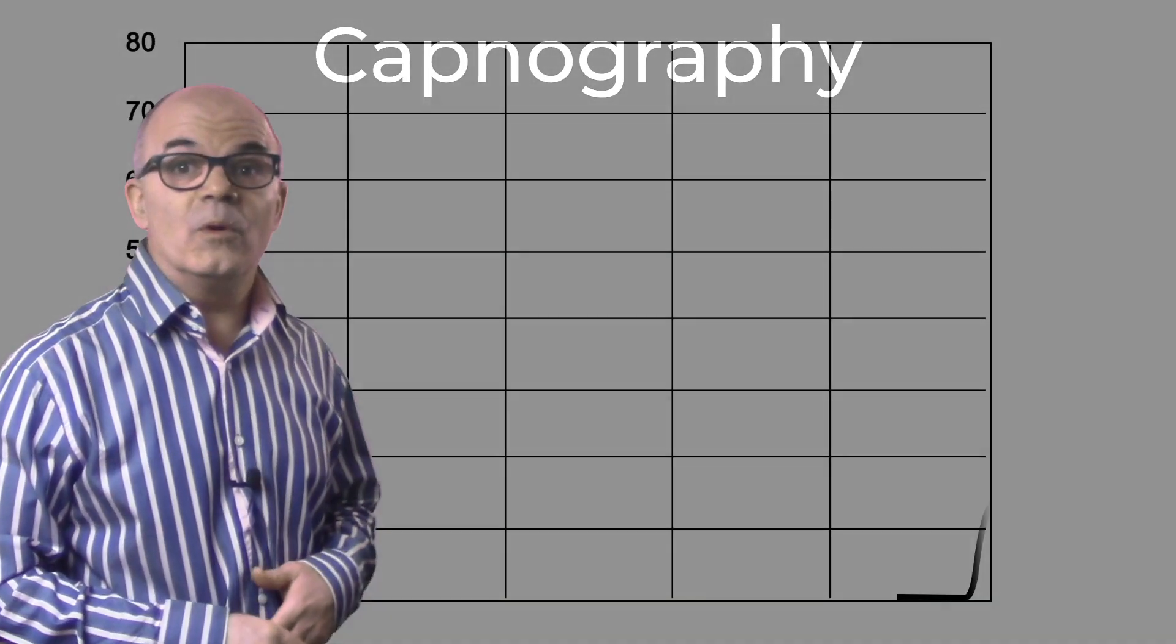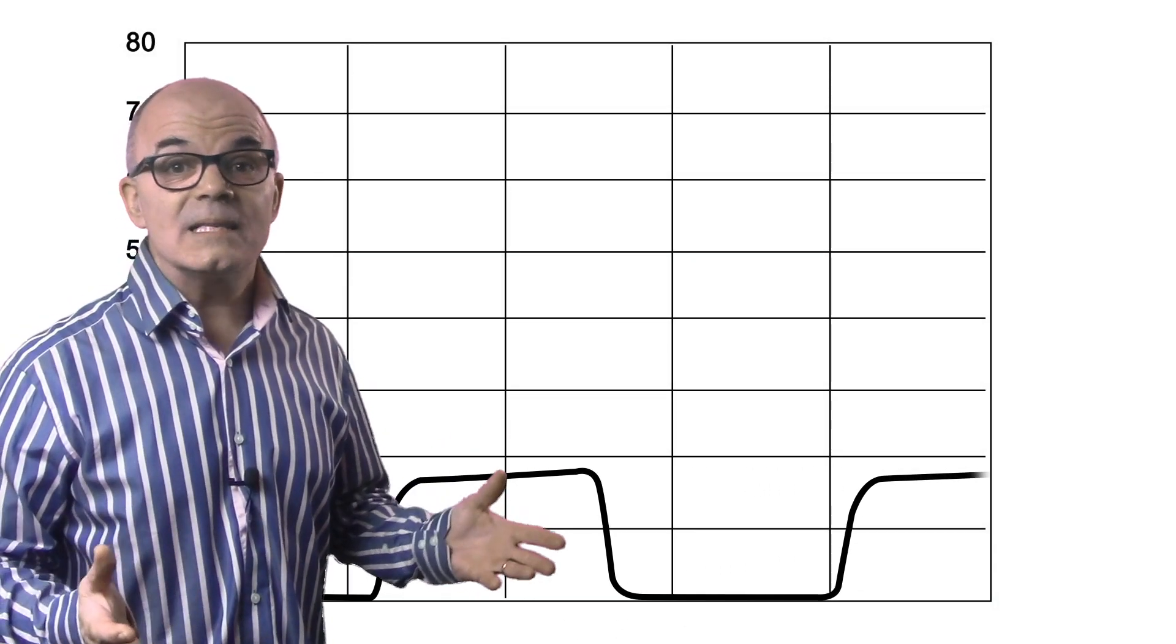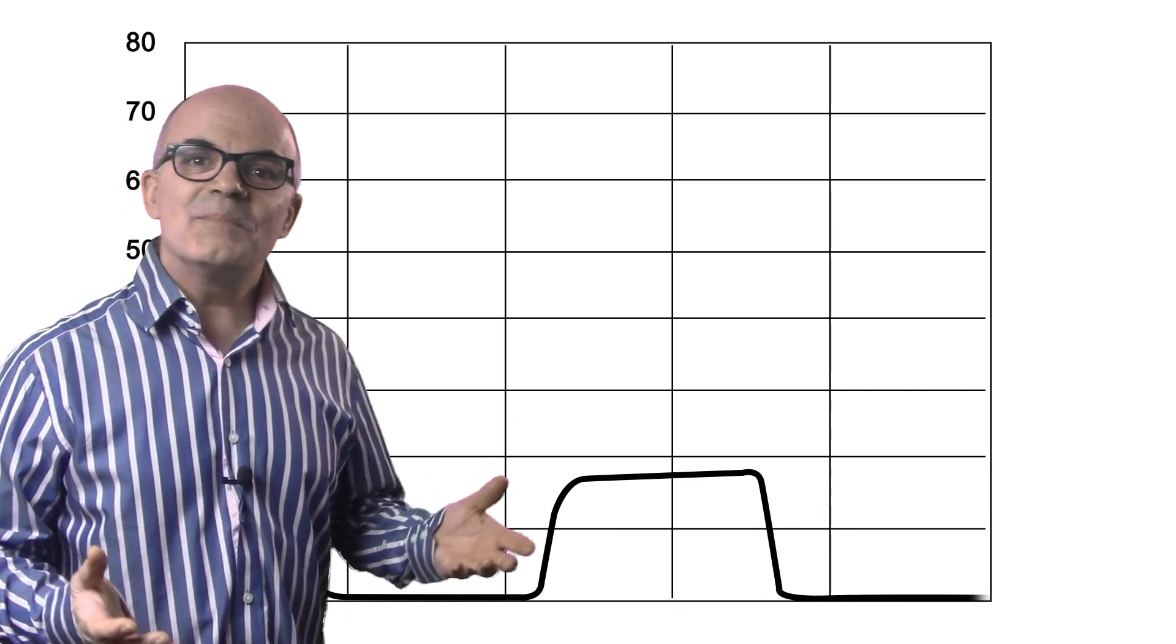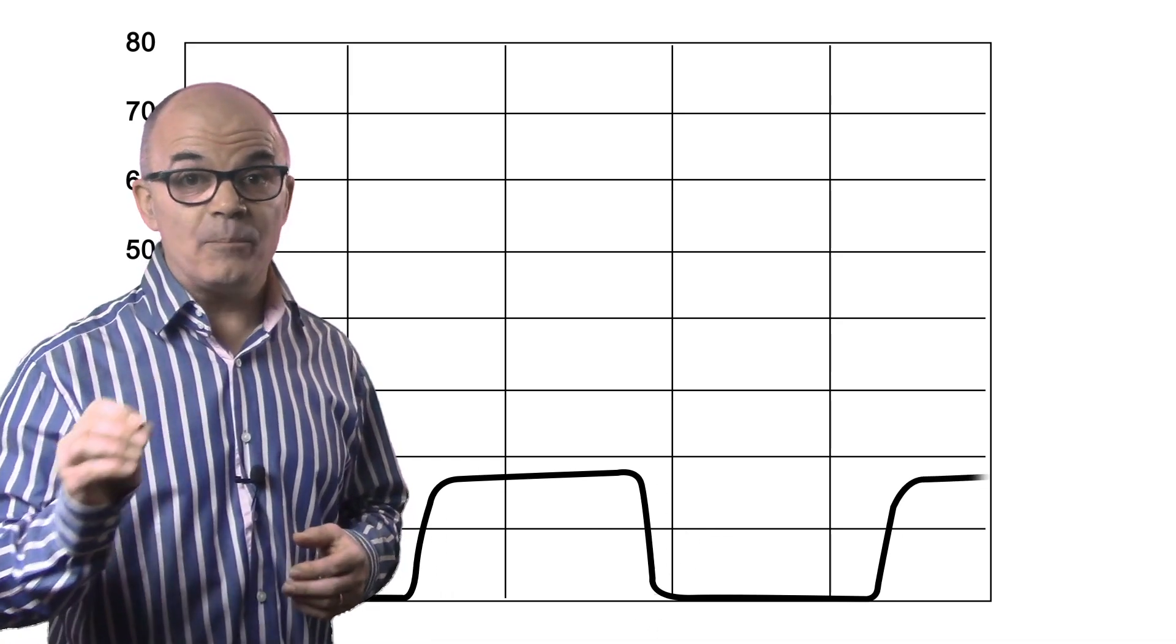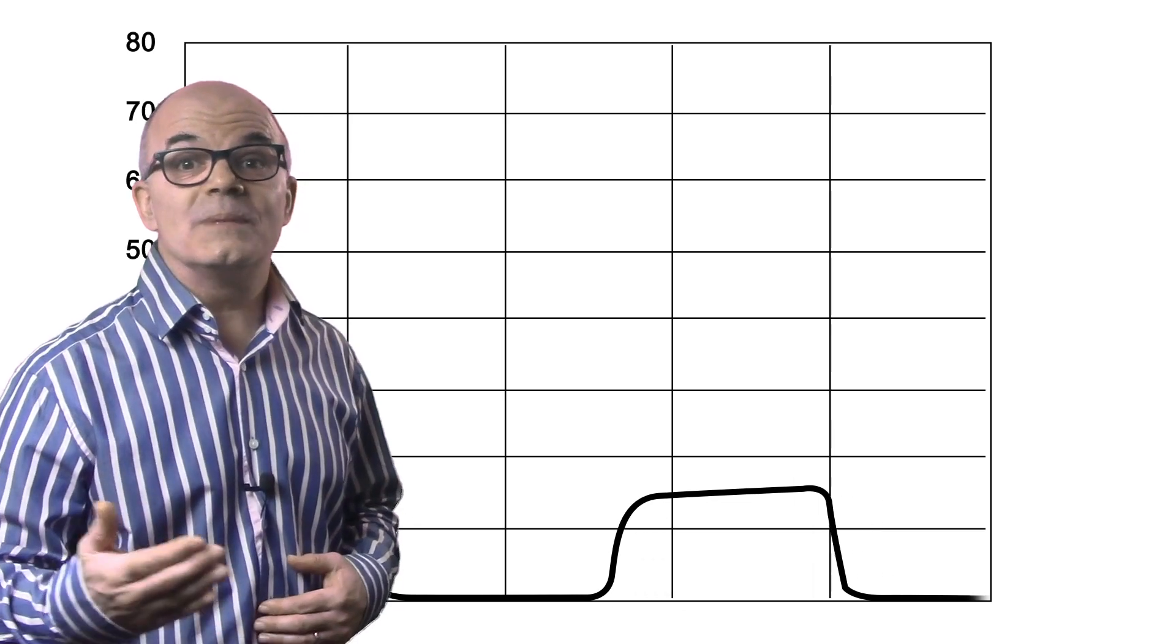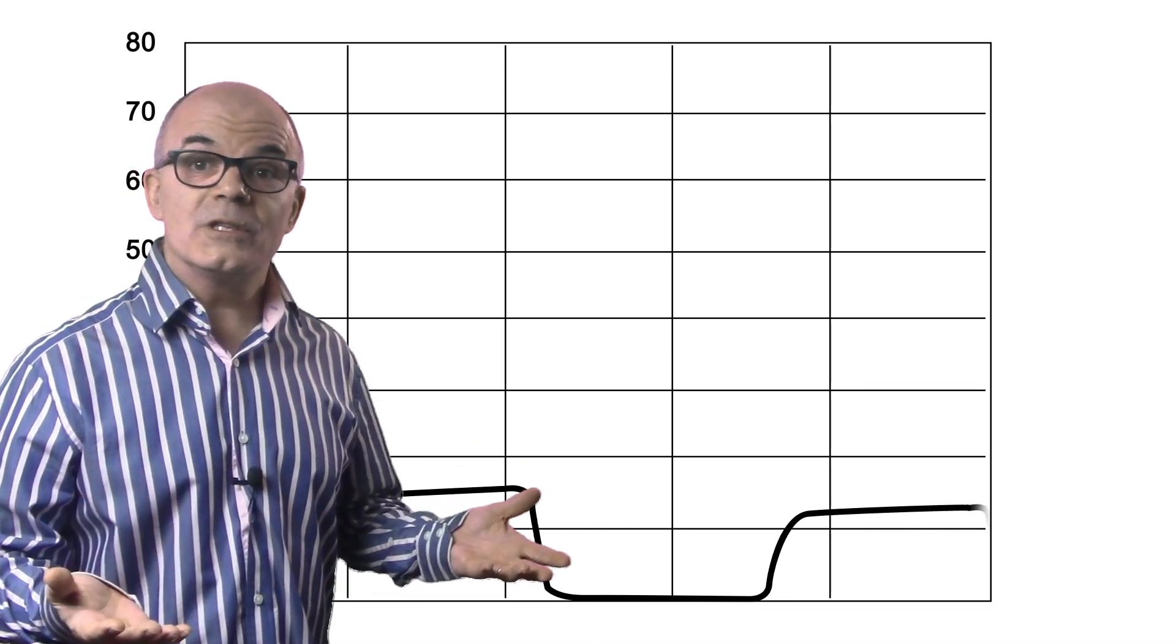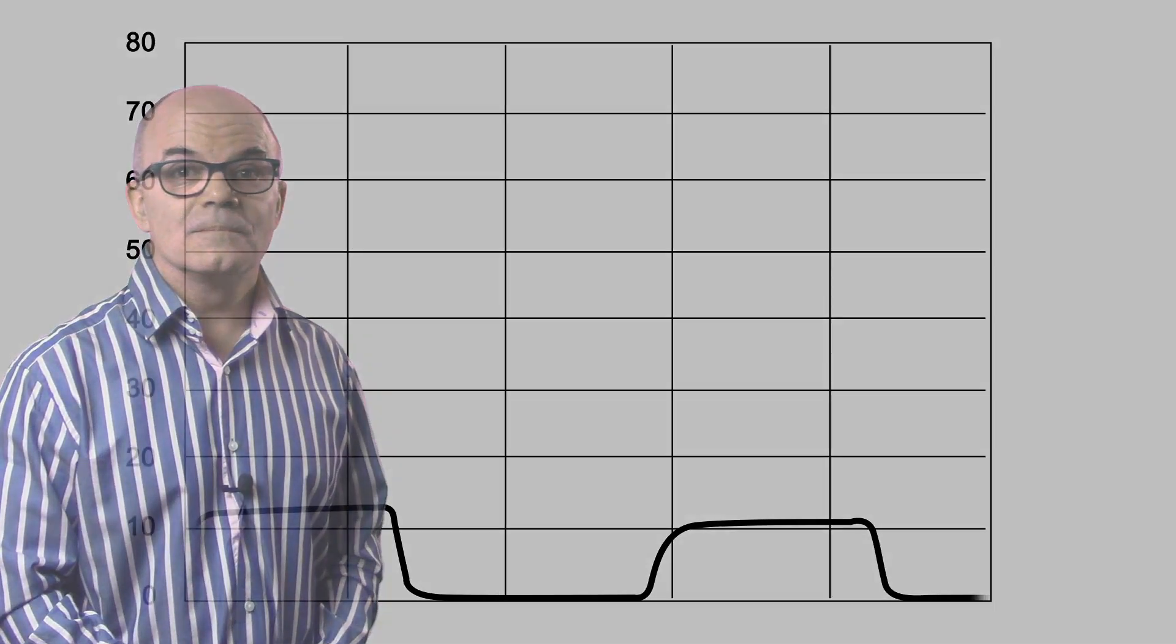In this example, the line is falling rather dramatically, and can even stay at baseline completely. This means there is no CO2 passing the sensor, and could indicate apnea, the patient has stopped breathing for some reason, the ET tube has become disconnected, or the patient has gone into cardiac arrest.